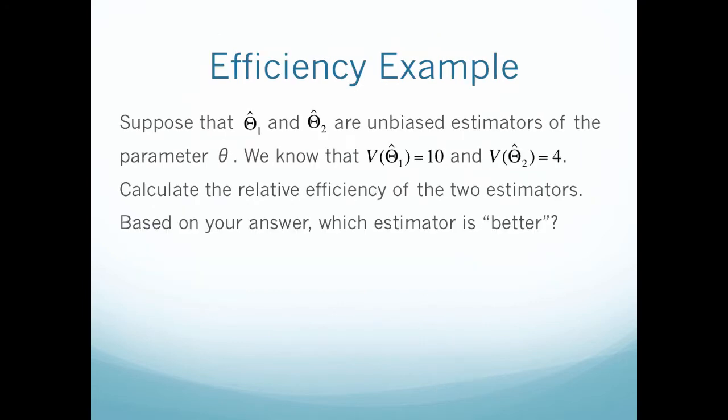Let's look at how efficiency works in an example. Suppose that theta hat one and theta hat two are unbiased estimators of the parameter theta. We know that the variance of one equals ten and the variance of the second equals four. Calculate the relative efficiency of the two estimators based on your answer. Which estimator is better?